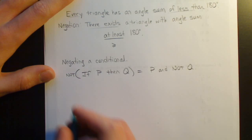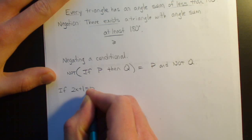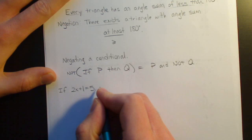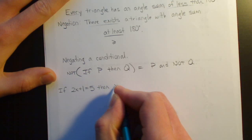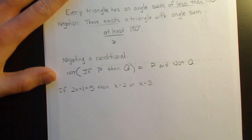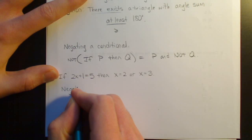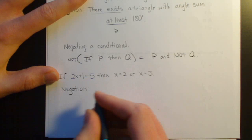So, the example that we've been using, a little example in the pretest, if 2x plus 1 equals 5, then x equals 2 or x equals 3. The negation would be